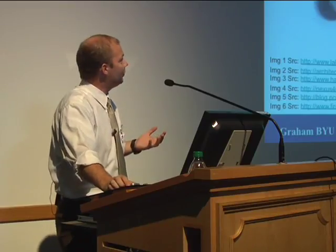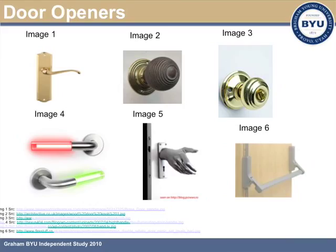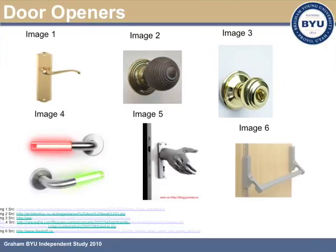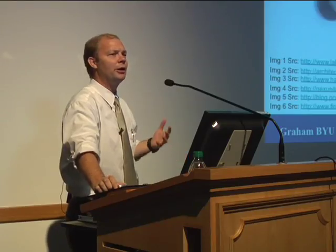I want to use an example to help you understand this. I've got a bunch of door openers here — doorknobs. All of these doorknobs have different affordances. What's an affordance of this doorknob? What's a feature or a characteristic of it that allows it to do something?